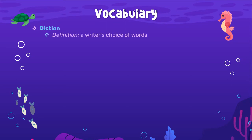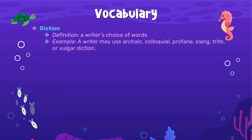So what is diction? That would be a writer's choice of words. The words that they use to get their point across — they have to be very selective in what they choose, because the types of words you use, your phrases, change how something is read and how a person looks at a particular passage. So diction is a writer's choice of words, and it's very important. For example, a writer may use archaic, colloquial, profane, slang, trite, or vulgar diction — and those are all the types we are going to learn in our vocabulary lesson.